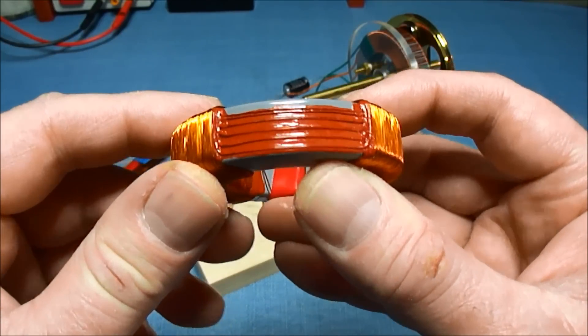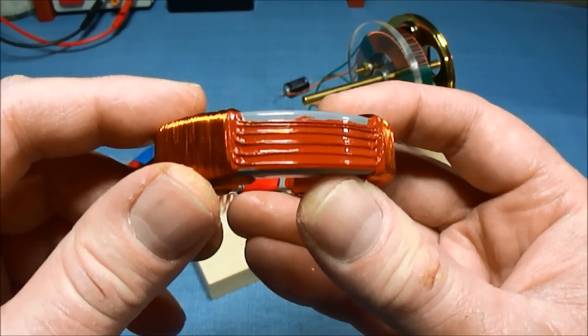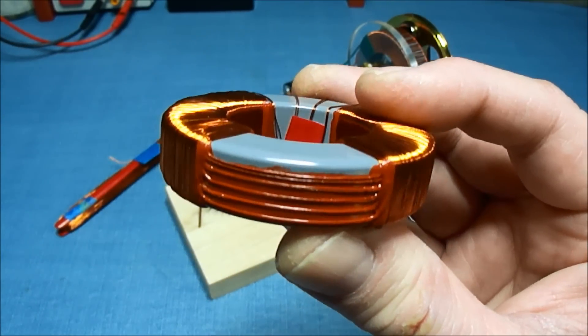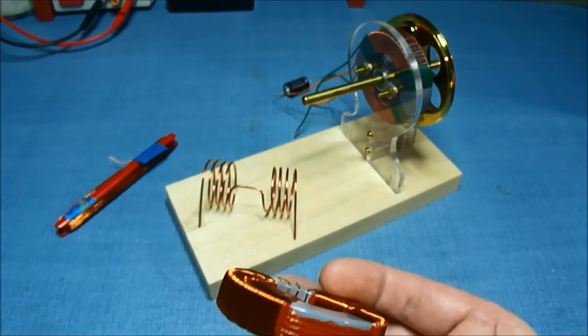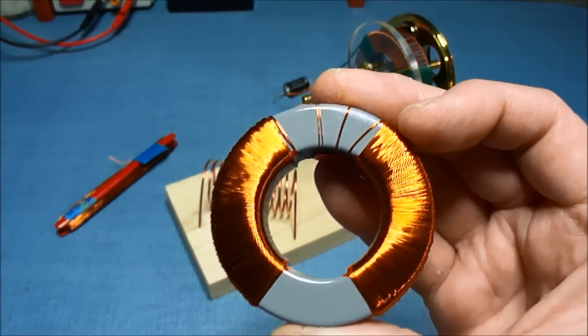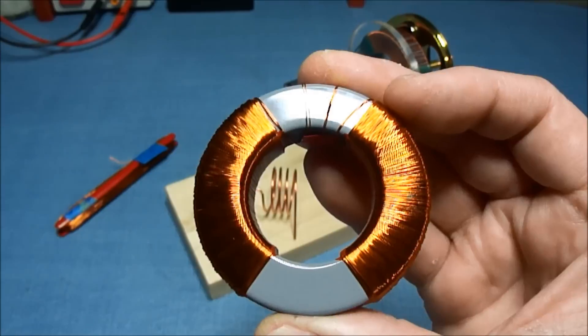I ended up with these crossover pieces here that I used some Corona dope to adhere to the core. I still got to put some tape over the ends here to help hold it in place on the dynamo.